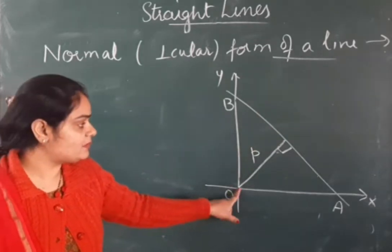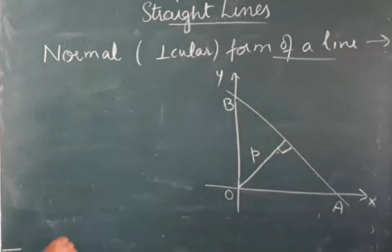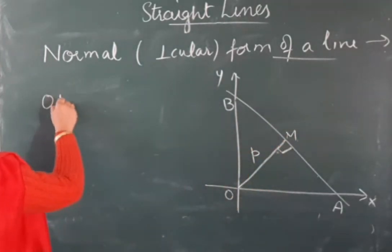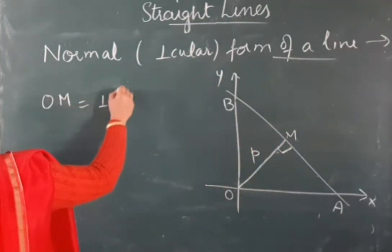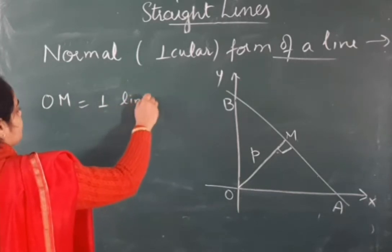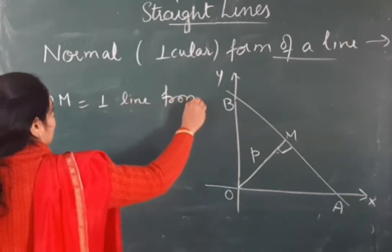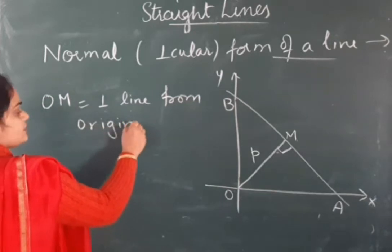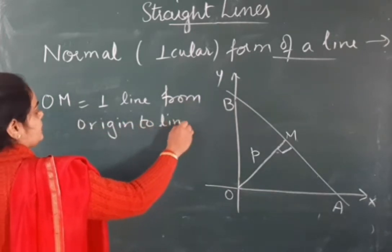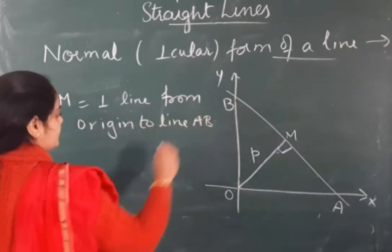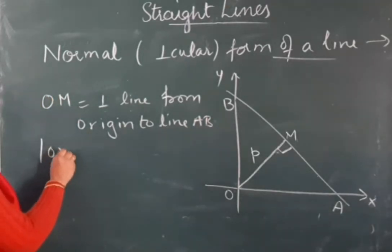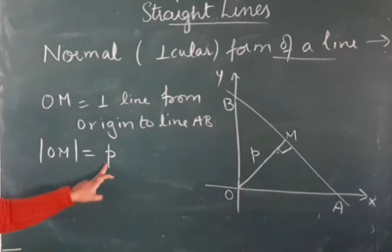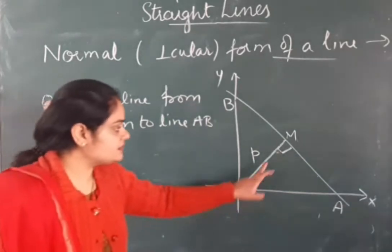This is the normal to line a — it is perpendicular from the origin. Let's take this foot of perpendicular as point M. OM is the perpendicular line from the origin to line a, and OM's distance is small p. So small p is the distance of this normal.